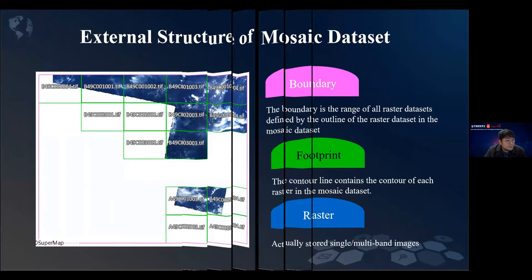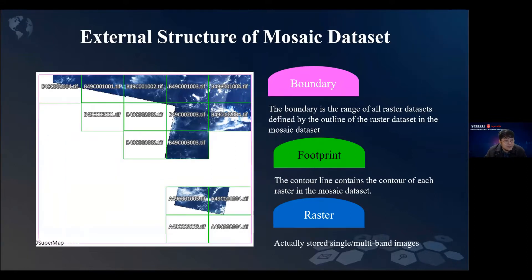A mosaic data site has the following three layers. The first is the boundary — the range of all raster data defined by the outline of the raster data in the mosaic data site. Then is the footprint, which means the contour line or outline containing the contour of each raster in the mosaic data site — we can see the green lines, they are footprints. And then is raster, which is also image data; they are actually stored single or multi-band images.